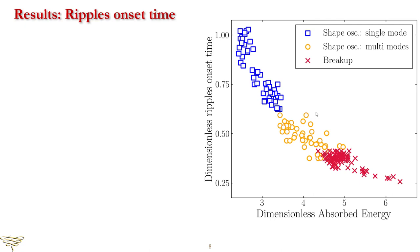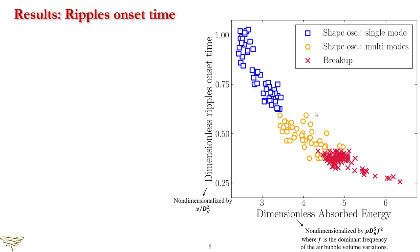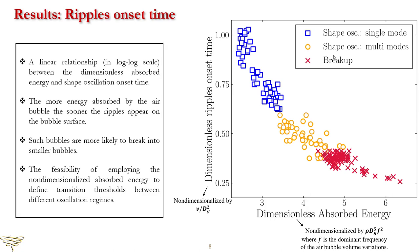To investigate this, we first conduct a scaling analysis on the Rayleigh-Plesset equation and non-dimensionalize the absorbed energy and the shape oscillation onset time. Then, we plot the non-dimensionalized ripples onset time versus dimensionless absorbed energy. This plot shows a linear relationship in log-log scale between the dimensionless absorbed energy and shape oscillation onset time. The results demonstrate that the more energy absorbed by the air bubble, the sooner the ripples appear on the bubble surface.